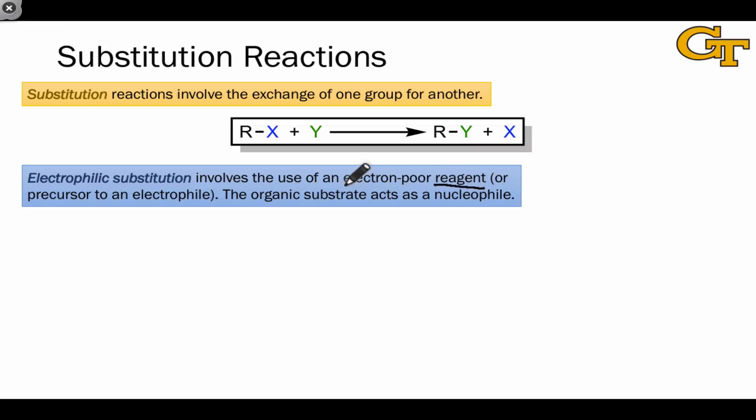Whenever you see the word electrophilic or nucleophilic preceding a reaction type, realize that it refers to the reagent, so that electrophilic substitution involves the use of an electron-poor or electron-deficient reagent that is itself an electrophile or serves as a precursor to a more reactive electrophilic intermediate. That means that the organic substrate in these reactions acts as a nucleophile.